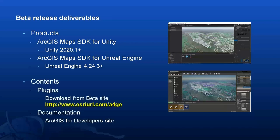The products will consist of two parts: the plugins and the documentation. The plugins will be available for download from the beta program on Esri's early adopter site. If you haven't joined the beta program yet, use the provided link to register. The documentation — which includes the guide documentation, the API reference, and samples — will be available on the ArcGIS for Developers site. A link to the documentation will be provided from the beta program.